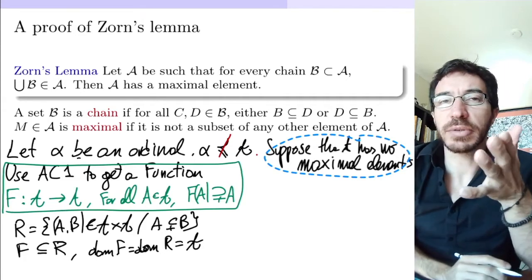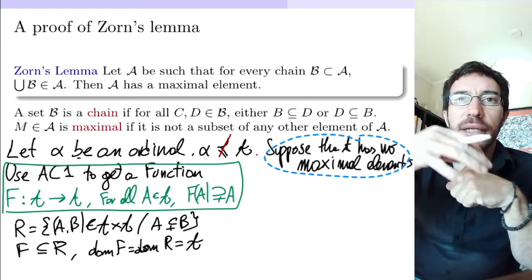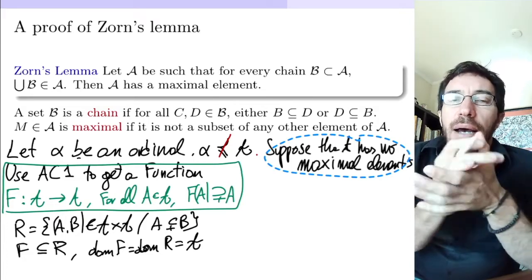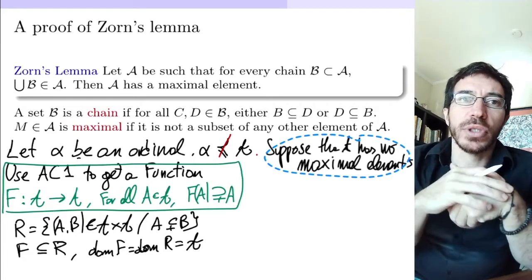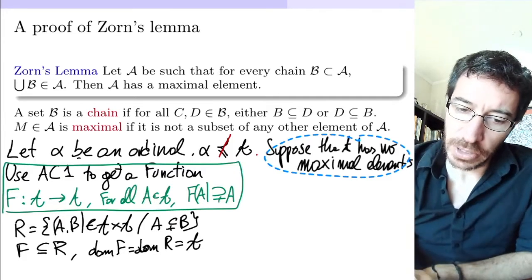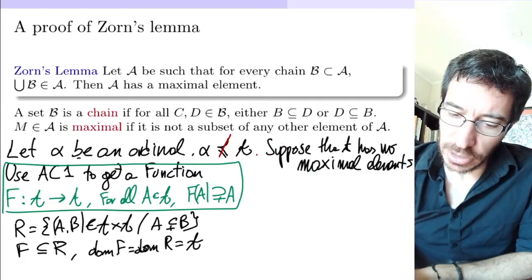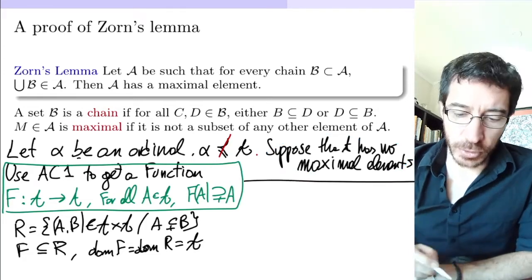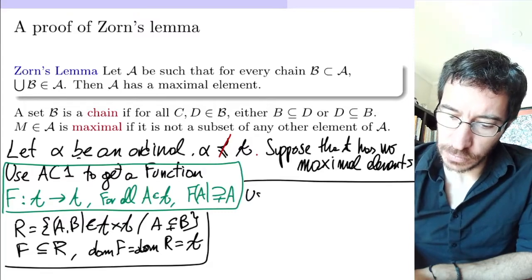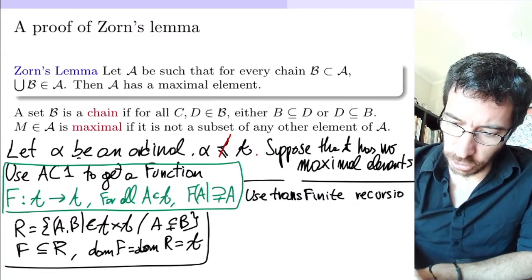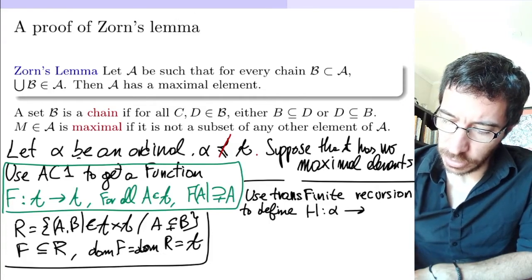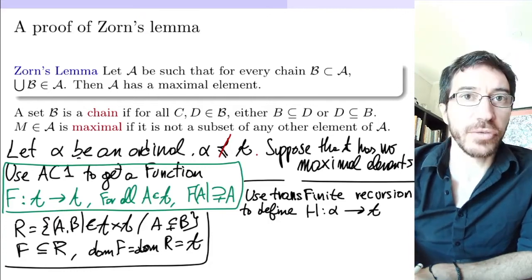Before we invoke the axiom of choice, we know there are many proper supersets, but we want a way to choose one in a uniform way. We have the axiom of choice, so we can do this. Now we want to use recursion to define this map. We use transfinite recursion to define a function H from alpha into the collection A.